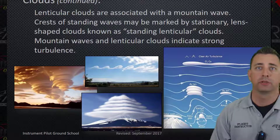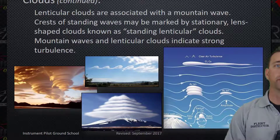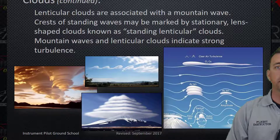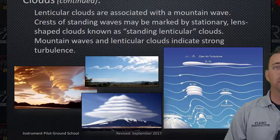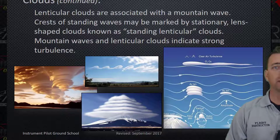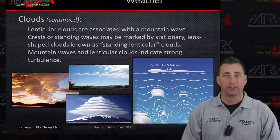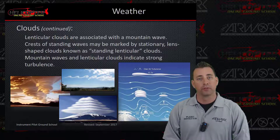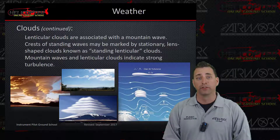Lenticular clouds are associated with mountain waves. Crests of standing waves may be marked by stationary, lens-shaped clouds known as standing lenticular clouds. Mountain waves and lenticular clouds indicate strong turbulence. Out here in Vegas, we get a lot of these coming over the mountains, and you can always be assured there is definitely some turbulence with those, so if you see them, try to stay clear.